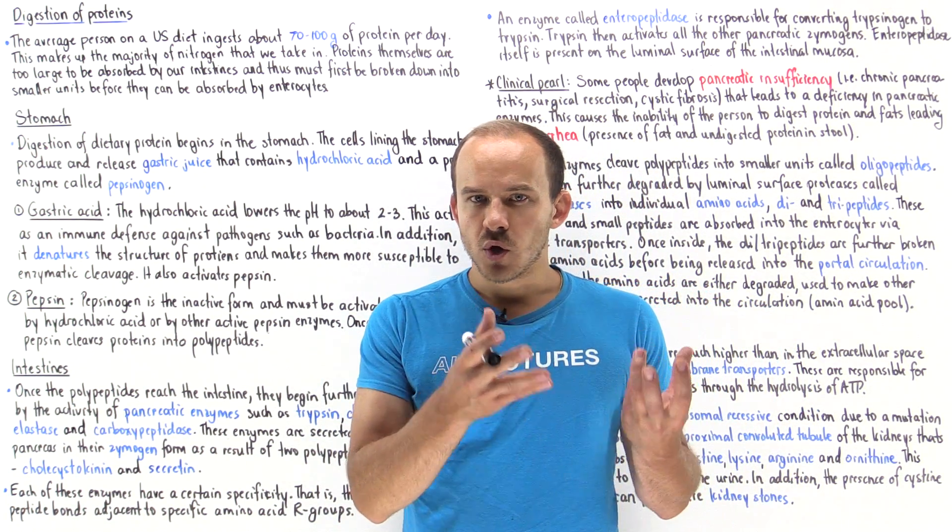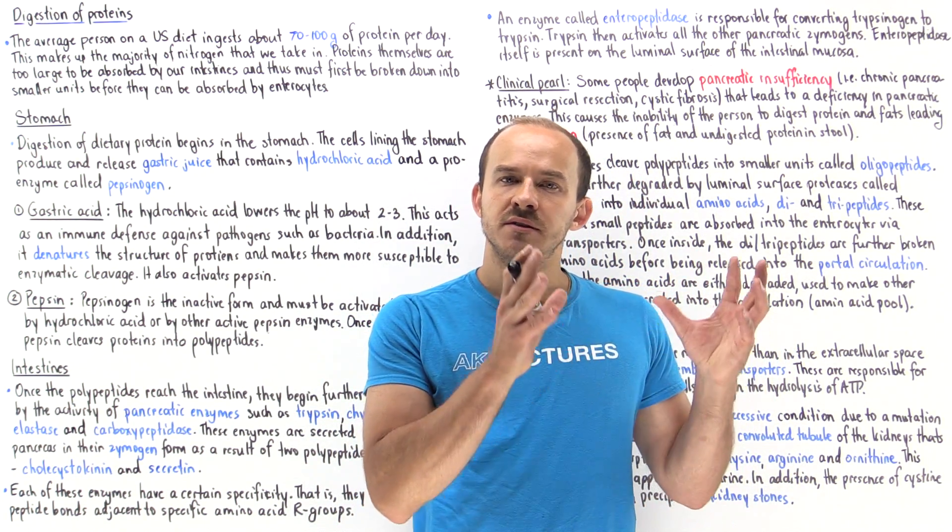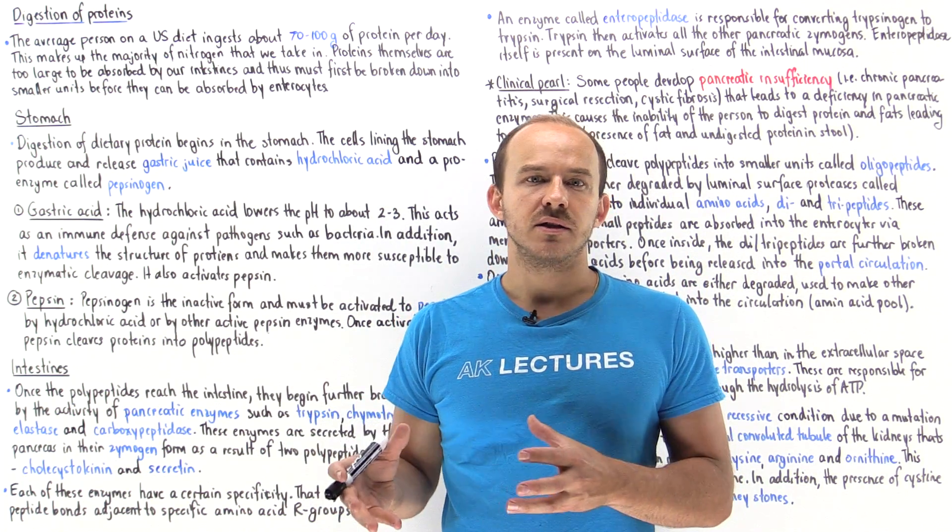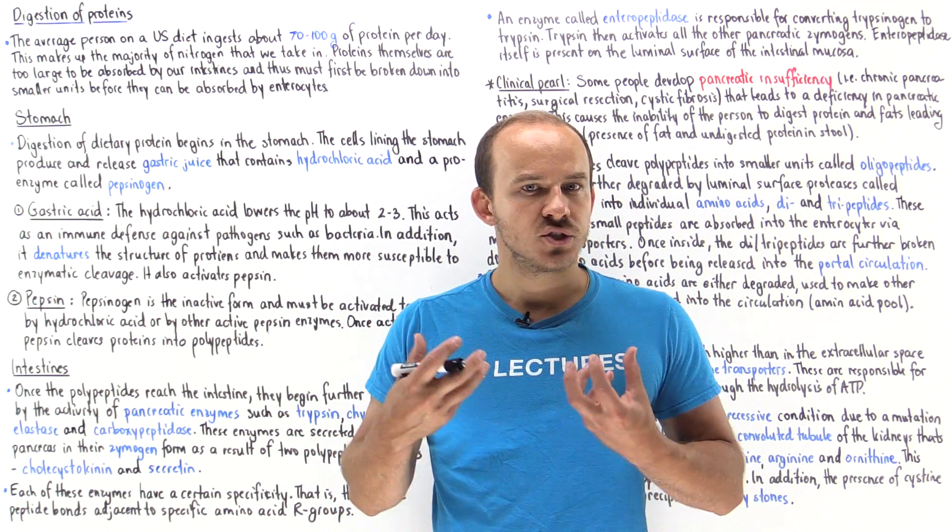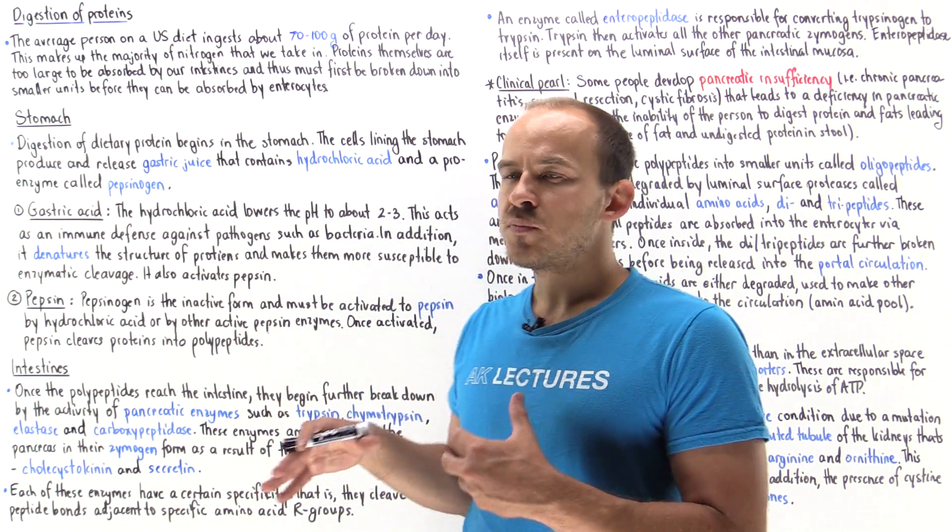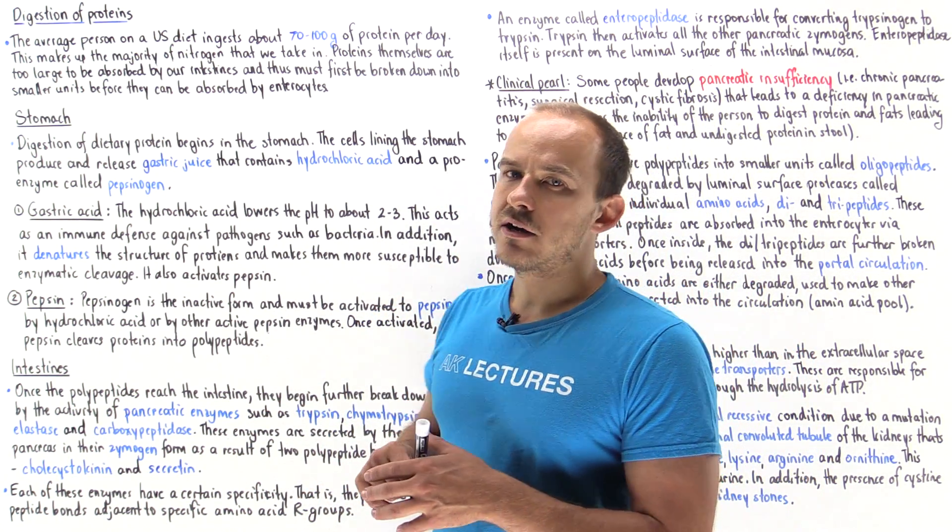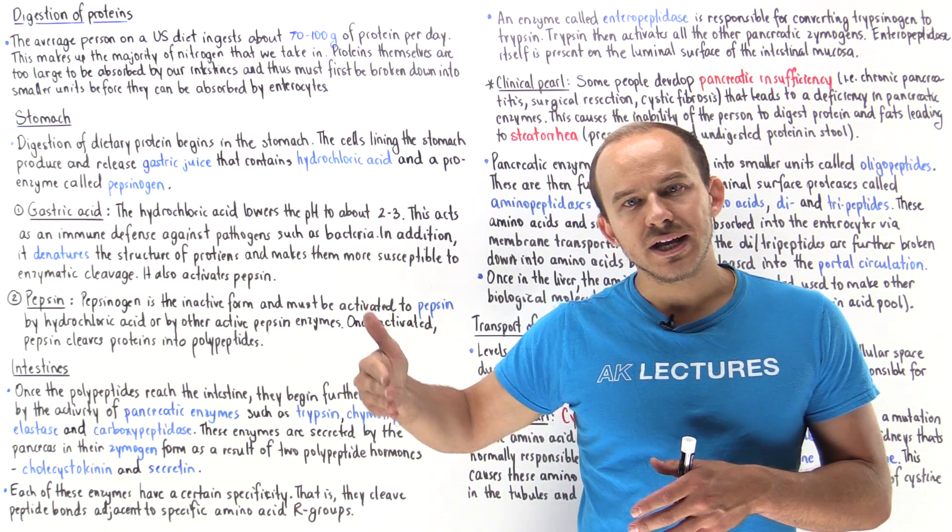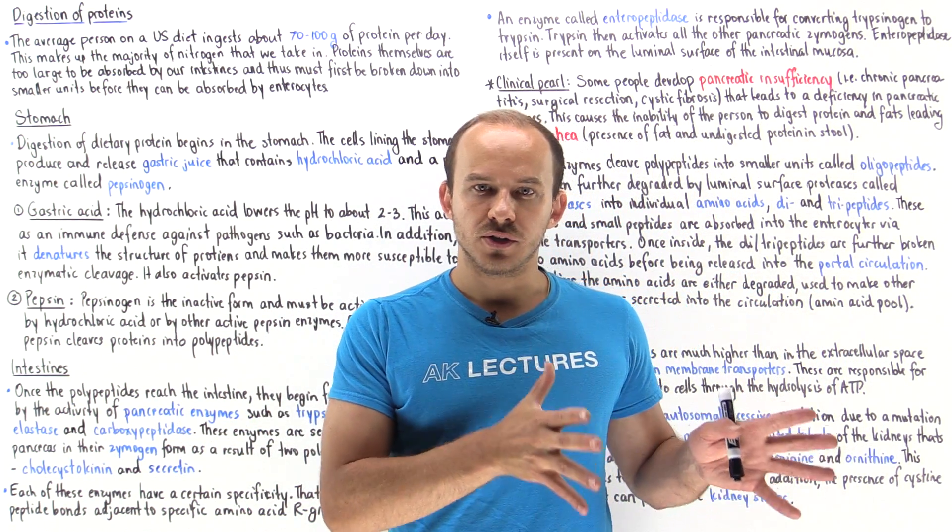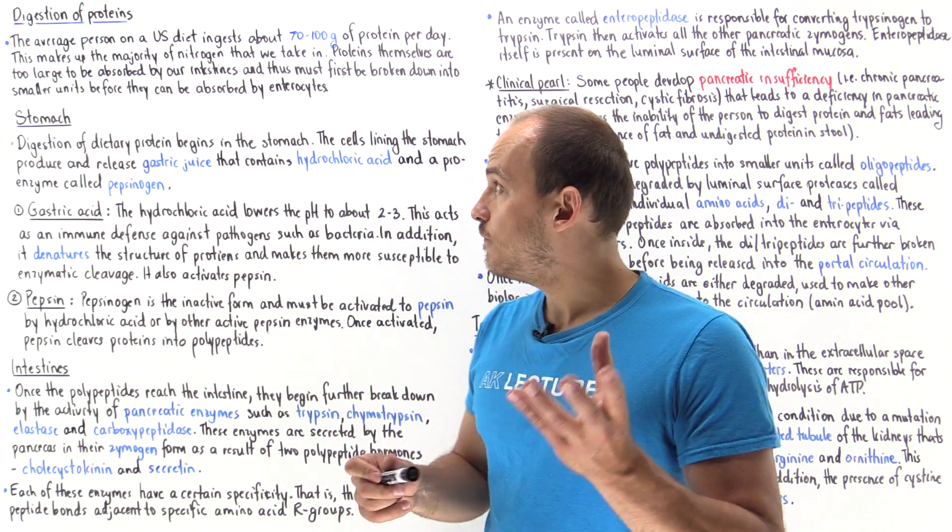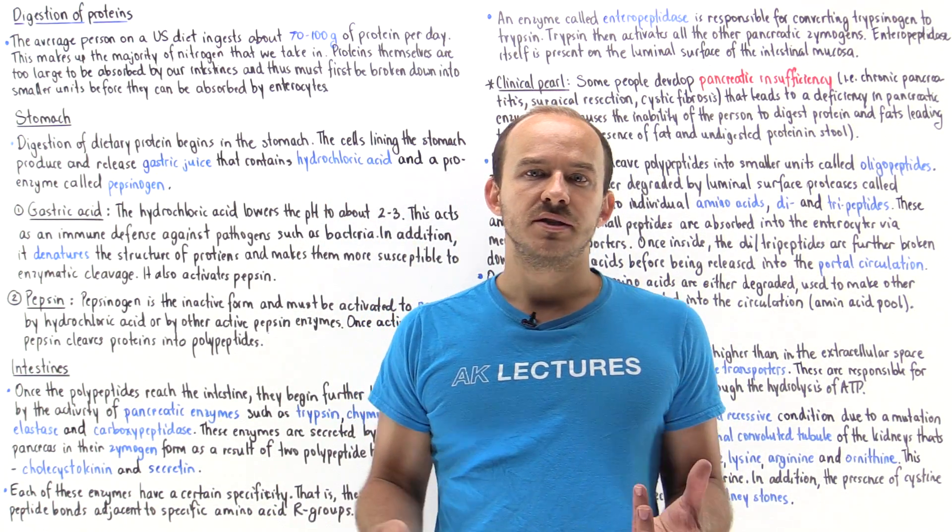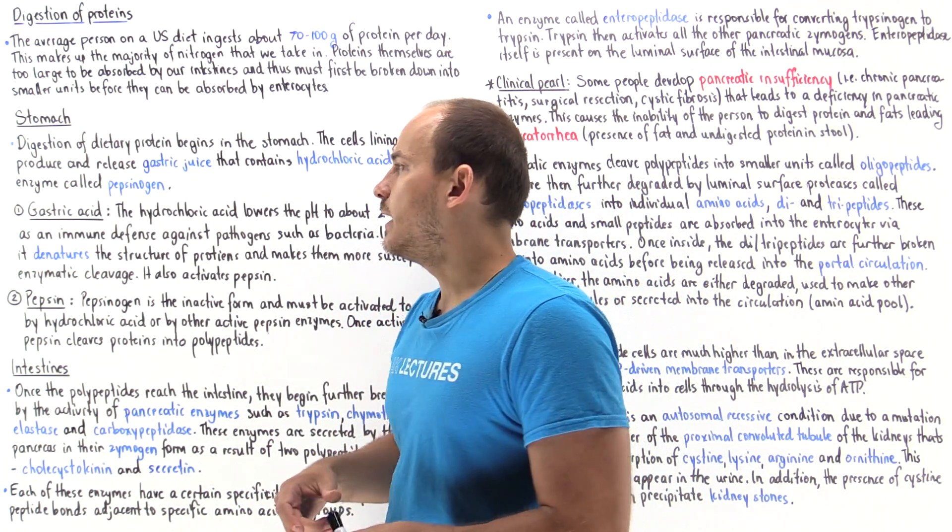The problem with protein is it's actually a relatively large and bulky macromolecule, and the cells of our intestines can't actually absorb this large macromolecule. So what has to happen is within our GI tract, we have to break down the protein into smaller units—amino acids, dipeptides, and tripeptides—before the enterocytes of the small intestine can actually absorb it into the body.